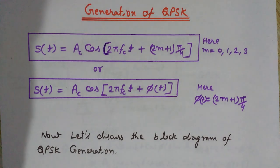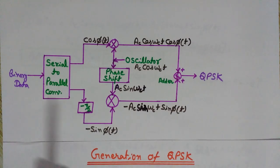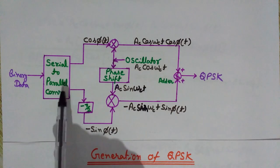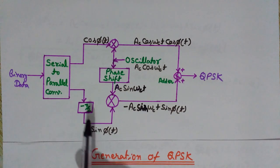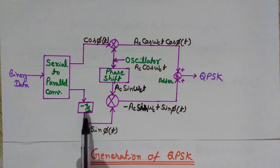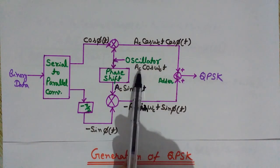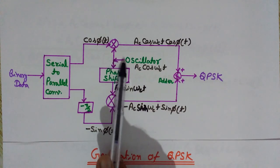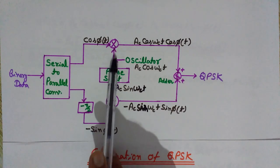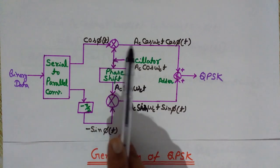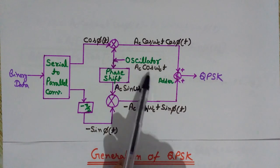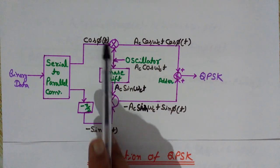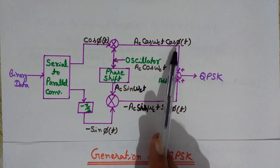Here is the block diagram of QPSK generation. The binary data goes into a serial-to-parallel converter. We have cos(φ(t)) on one path. The oscillator produces Ac·cos(ωct), and its output goes to a multiplier. This multiplier has cos(φ(t)) and Ac·cos(ωct) as inputs, giving the output Ac·cos(ωct)·cos(φ(t)).